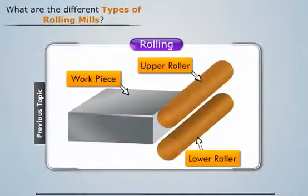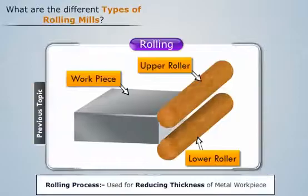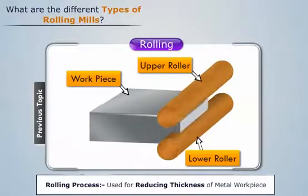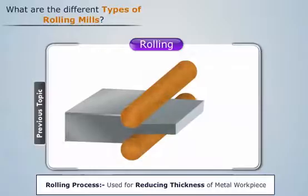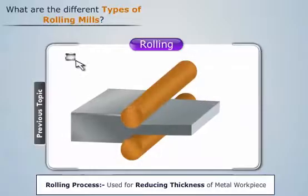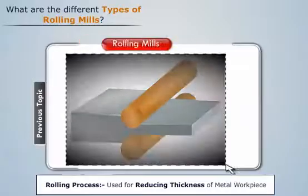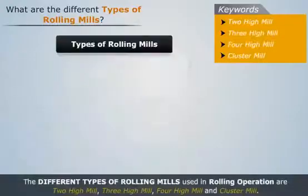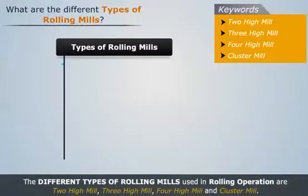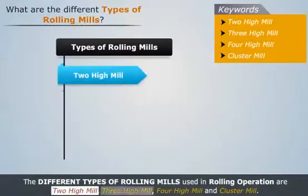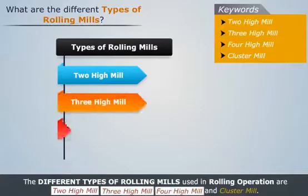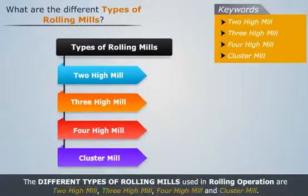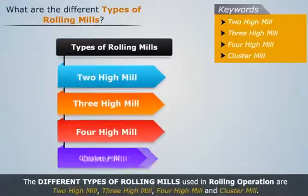The rolling process is used to reduce the thickness of a metal work piece by passing it between rotating rollers. The whole setup used for this is called a rolling mill. The main types of rolling mills are the 2 high mill, 3 high mill, 4 high mill, and cluster mill. Let's discuss each of them one by one.